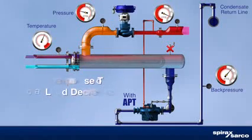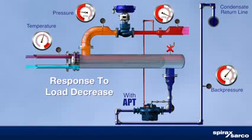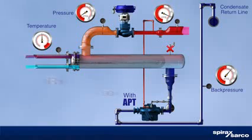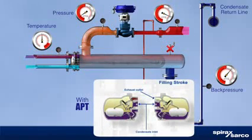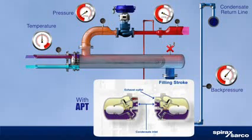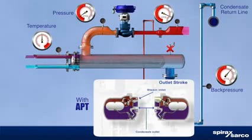By not using a vacuum breaker, you can reduce condensate acidity and large temperature swings in the heat exchange equipment. Heat transfer and control improve. Corrosion, water hammer, tube failure, excessive treatment chemical dosing, and high maintenance costs become distant memories.